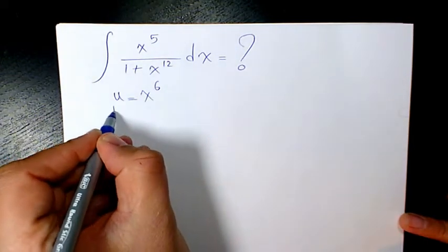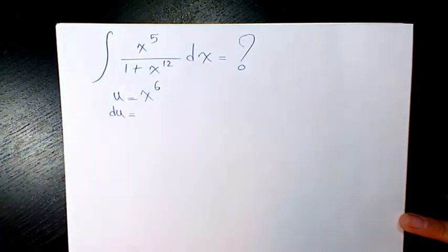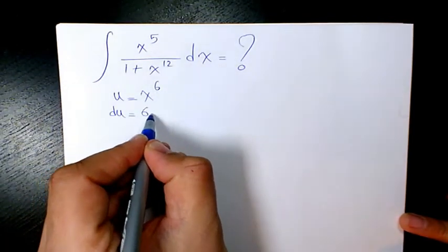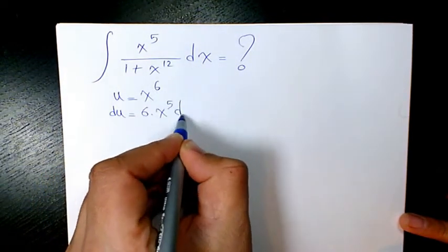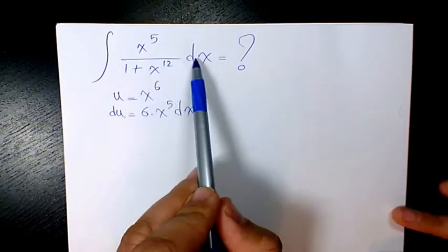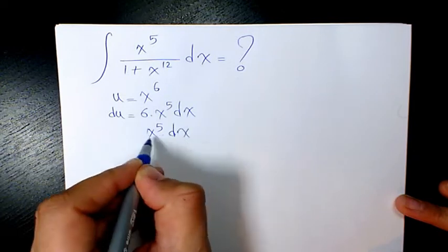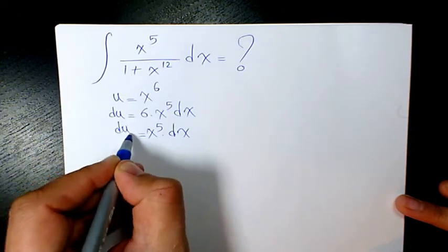So I find the derivative of both sides. u becomes du. And x to the power of 6 will be 6 times x to the power of 5 dx. Here I have x to the power of 5 dx, and here I have du divided by 6.